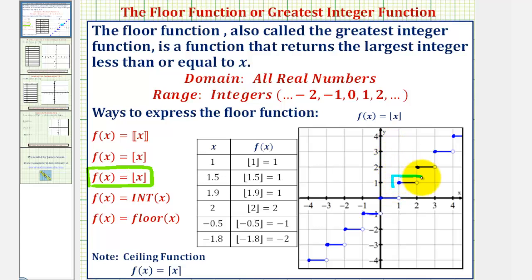To better understand what's happening, let's focus on one piece of our floor function. Let's complete a table of values. When x is one, we're looking for the largest integer less than or equal to one. Since one is an integer, the function value would be positive one. Notice when x is one, we have an open point at y equals zero and a closed point at y equals one — telling us the function value is one, not zero.